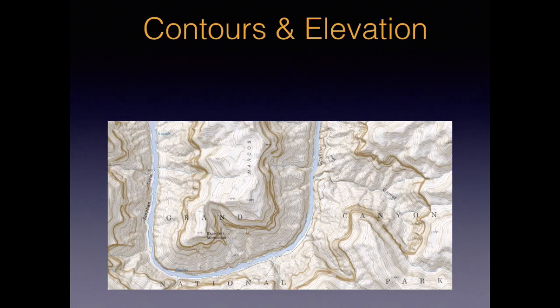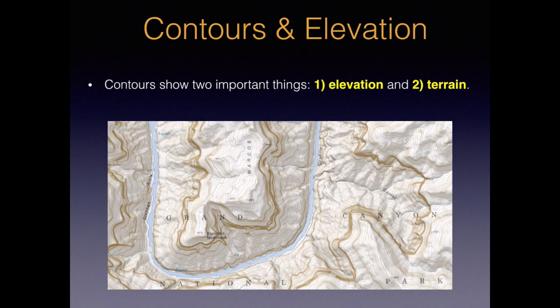Hello, John here with the Columbia River Orienteering Club in Portland, Oregon. Do those brown squiggly lines look like a big plate of spaghetti? After this video, they'll make a lot more sense. Contours show two important things: elevation and terrain. Our video today covers elevation, and the next video in the series covers terrain and reading contours. Let's get started.